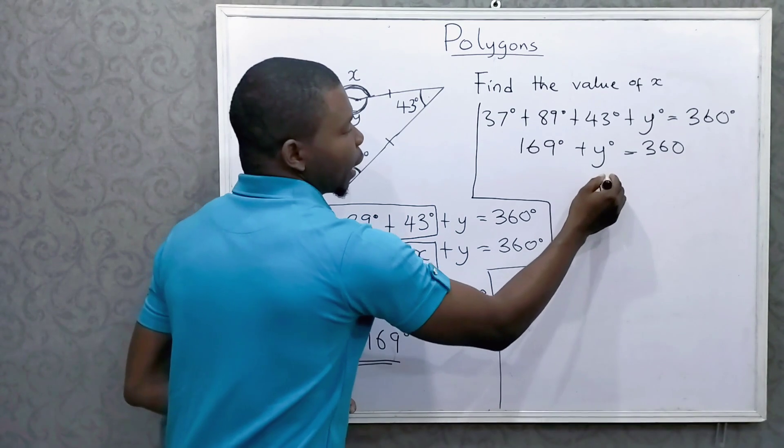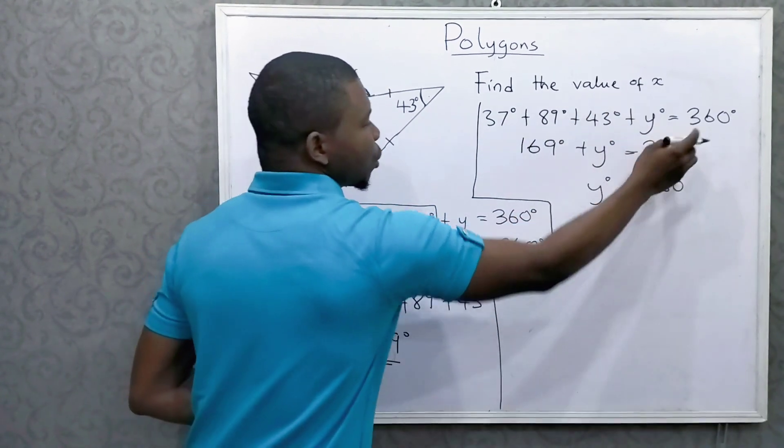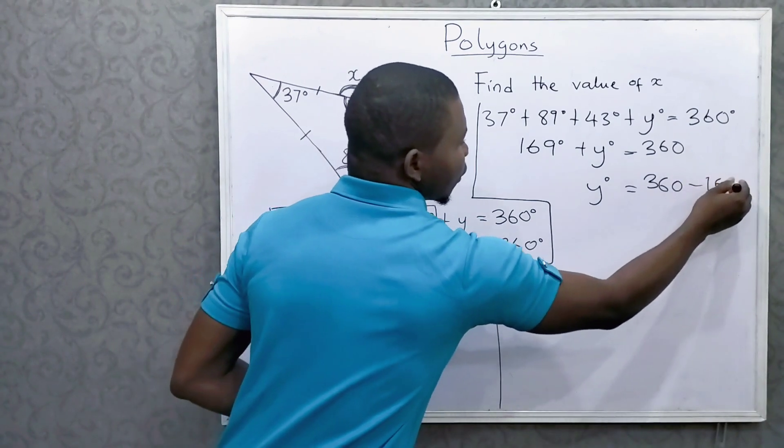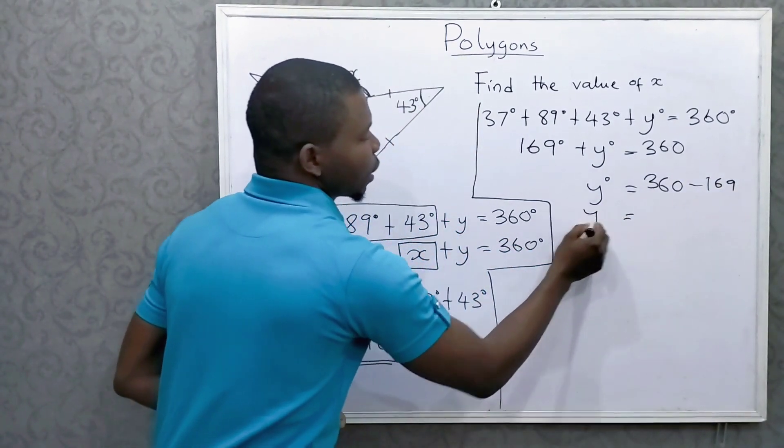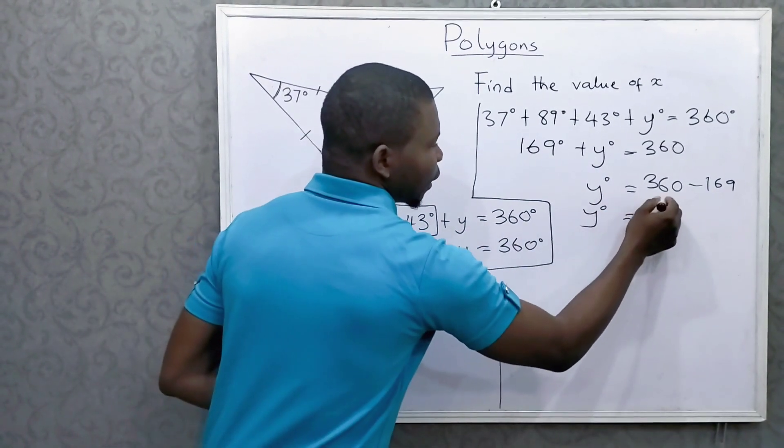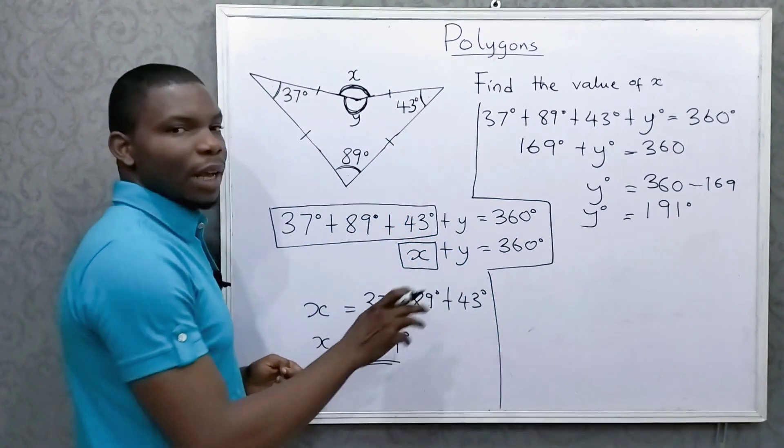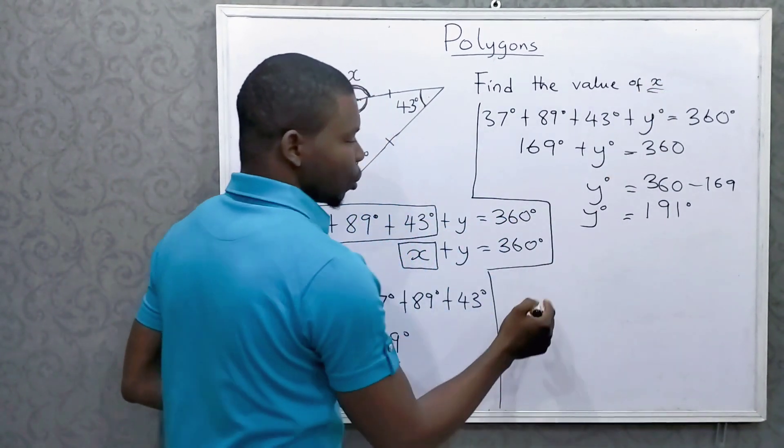So to get y, you say 360 minus 169. And that would be 191. So that is the value of y. But we are not asked to find y. We are asked to find x.